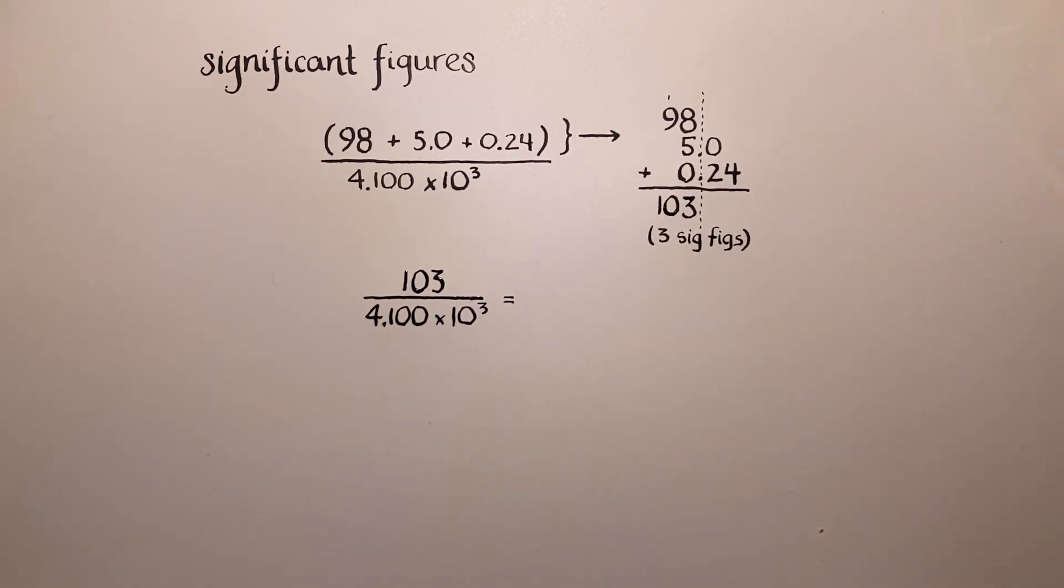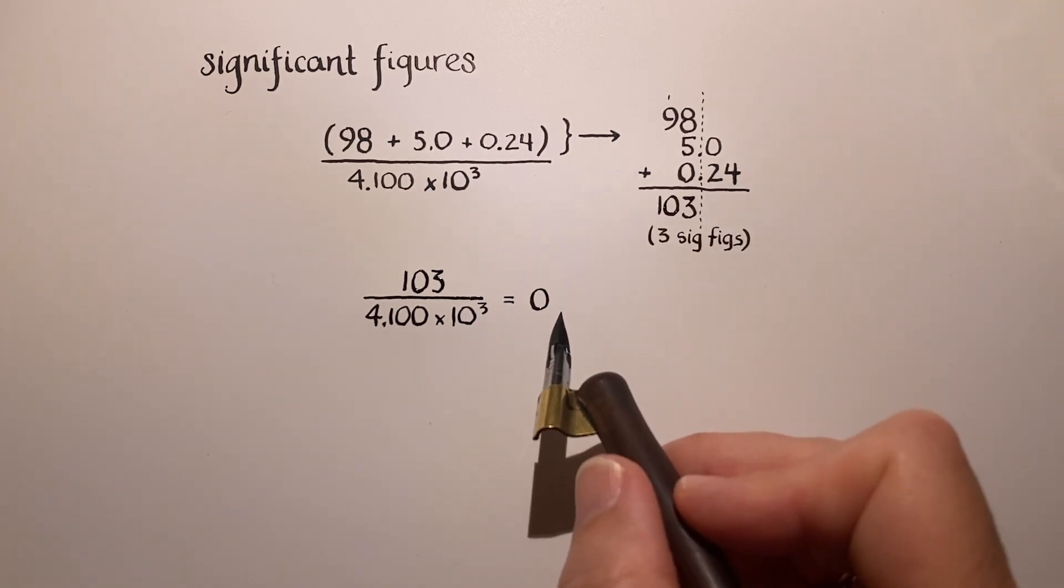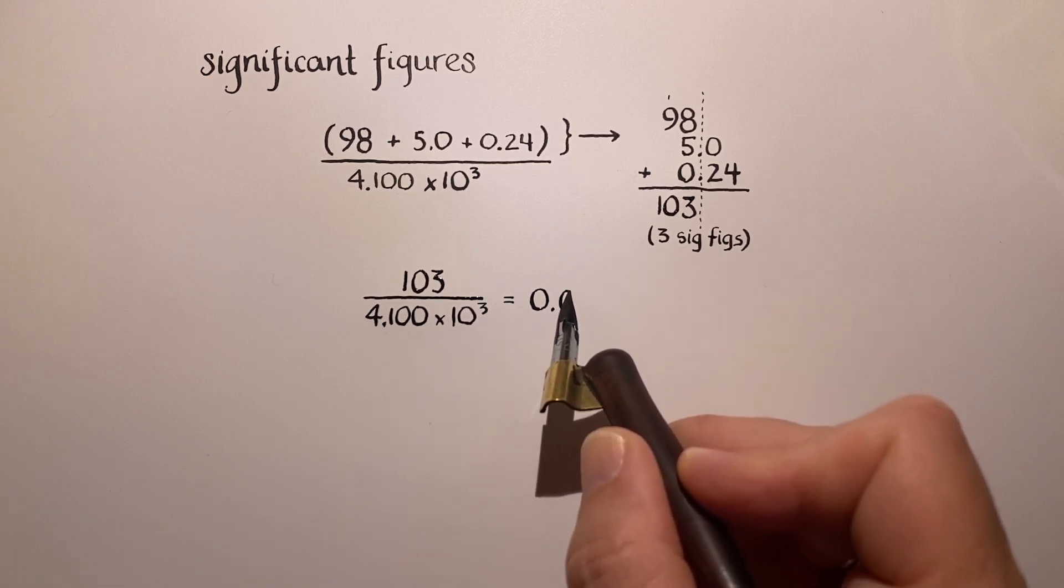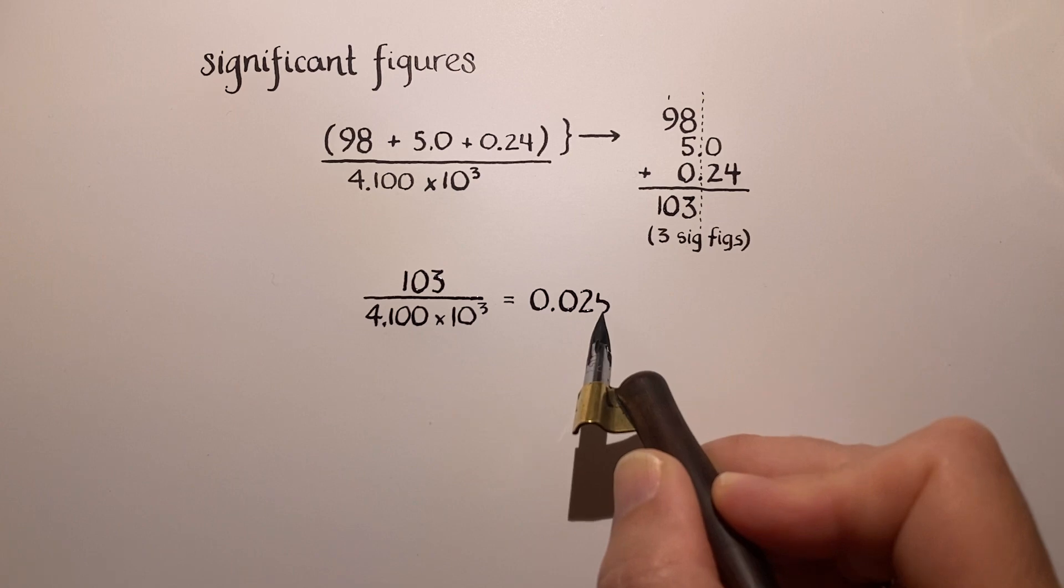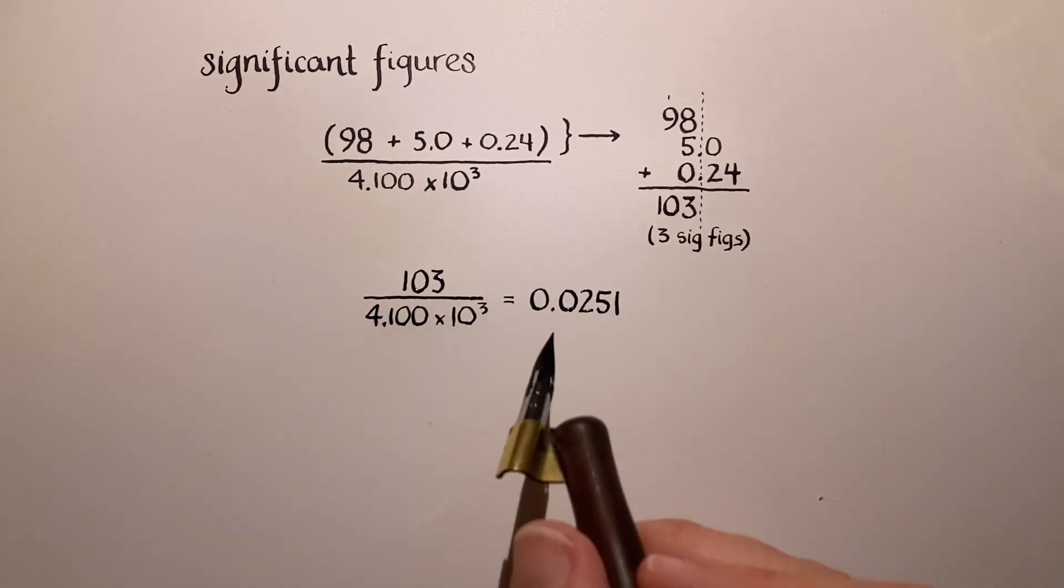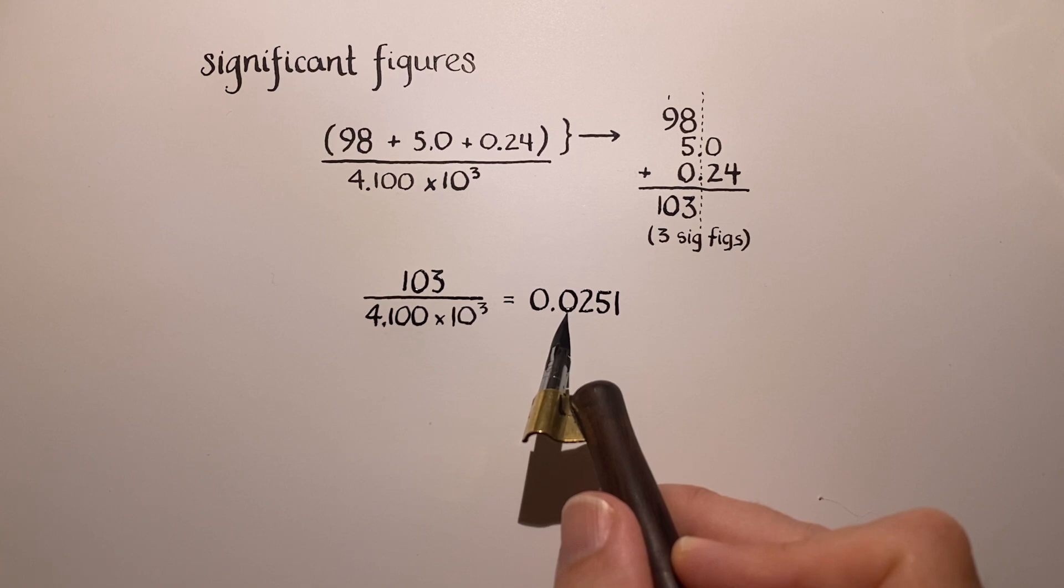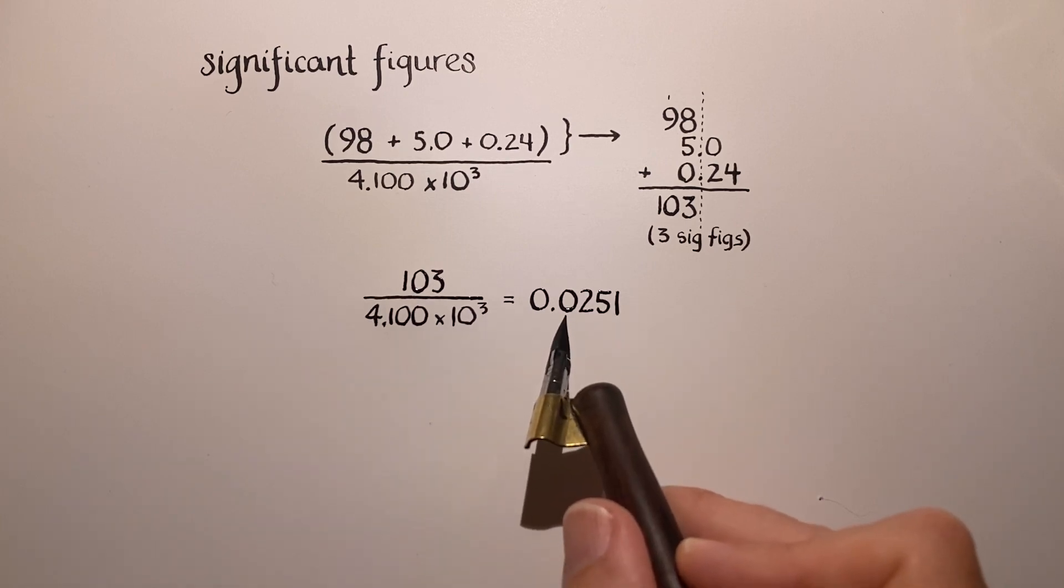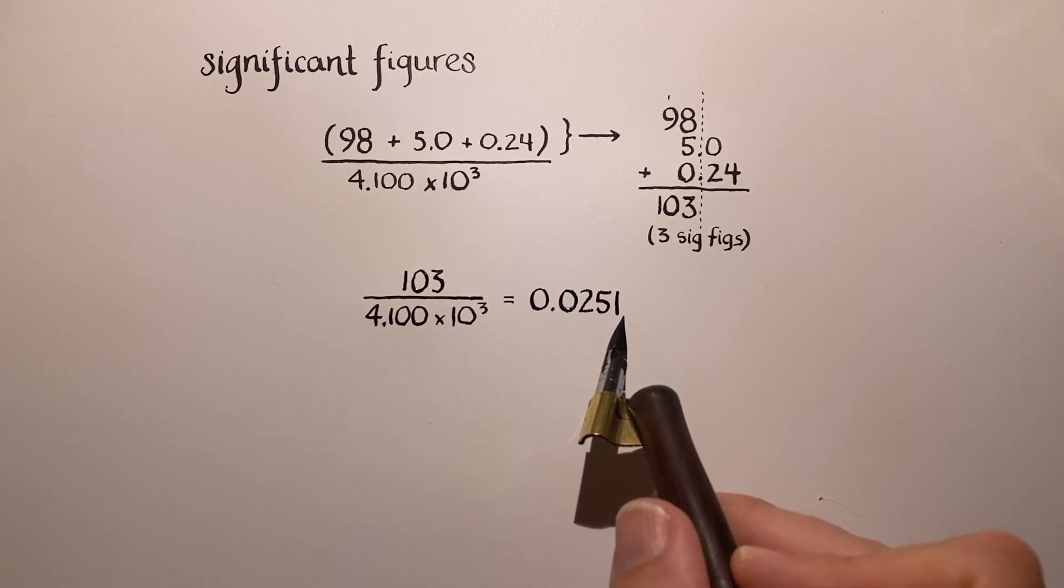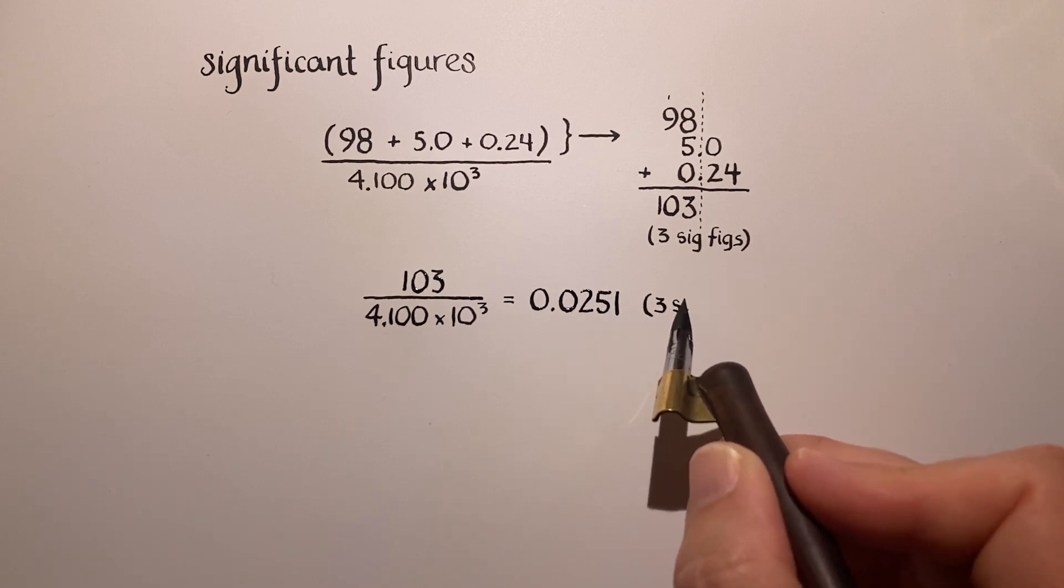So if you put that into your calculator and carry that out, you should get... You try this out, you should try this whole thing out yourself. But I just wanted to show you this as an example. You would get 0.0251. Okay, so notice this 0 here is past the decimal point, but it is before you see any of the values here. This is considered a placeholder. Here are the three significant figures that you got.